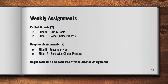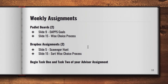The last slide of our presentations is the most important because it tells you what is due. This week for weekly participation, you're going to complete two Padlet boards — one on slide 9 and one on slide 15. You're also going to Dropbox the scavenger hunt and your Wise Choice process sorting activity. Those compile the 10 points for participation this week. Additionally, you need to begin task one and task two of your advisor assignment, which is due on week three.